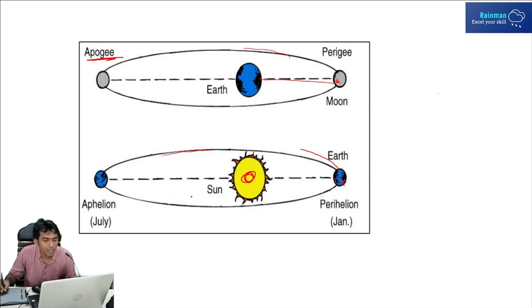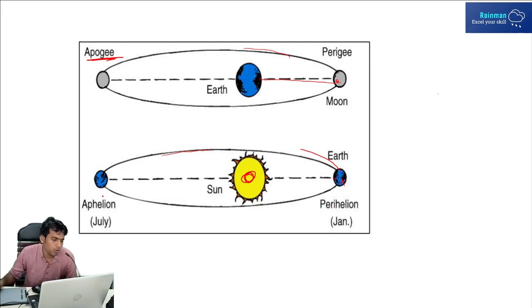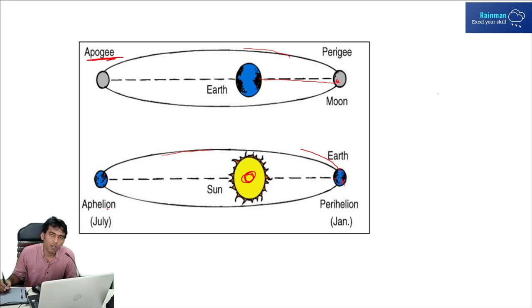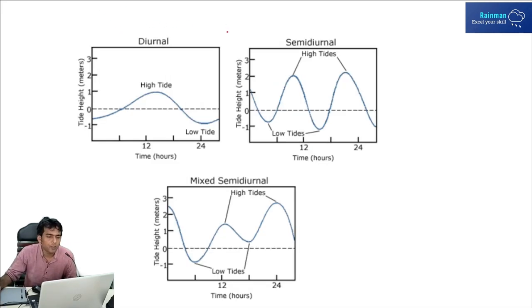In the case of Earth and Sun, when Earth is located at the nearest point to the Sun, it is called Perihelion, and it occurs around January 2nd. When Earth is at the farthest point from the Sun, it is called Aphelion, and it occurs around July 2nd. There are three types of tides: diurnal, semi-diurnal, and mixed semi-diurnal.